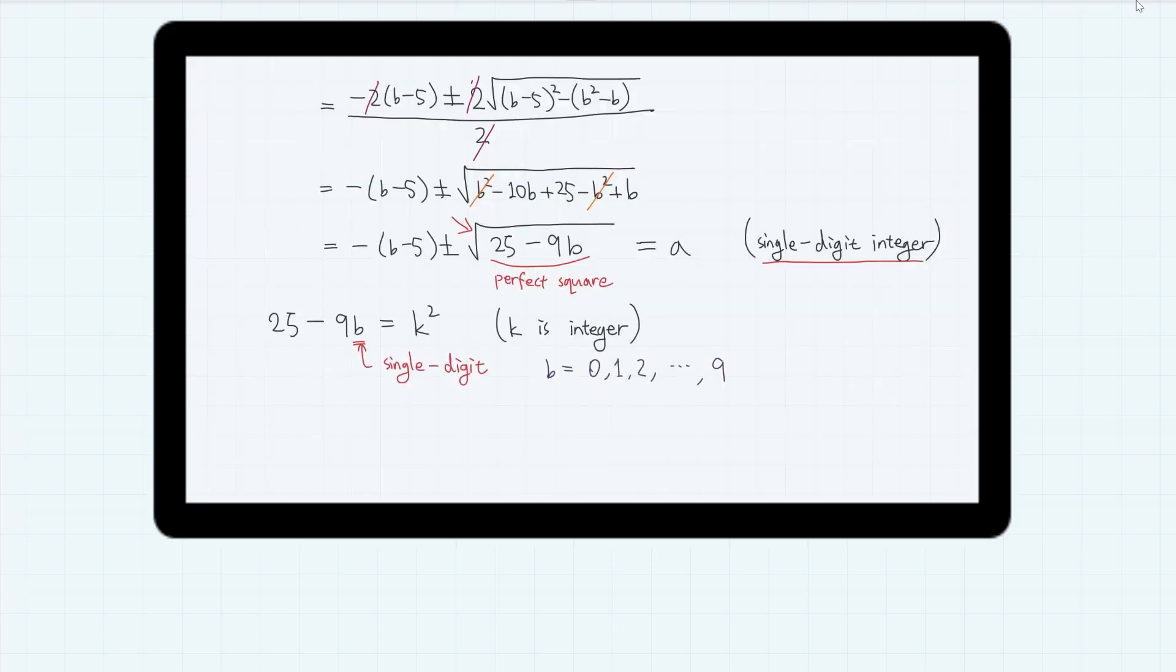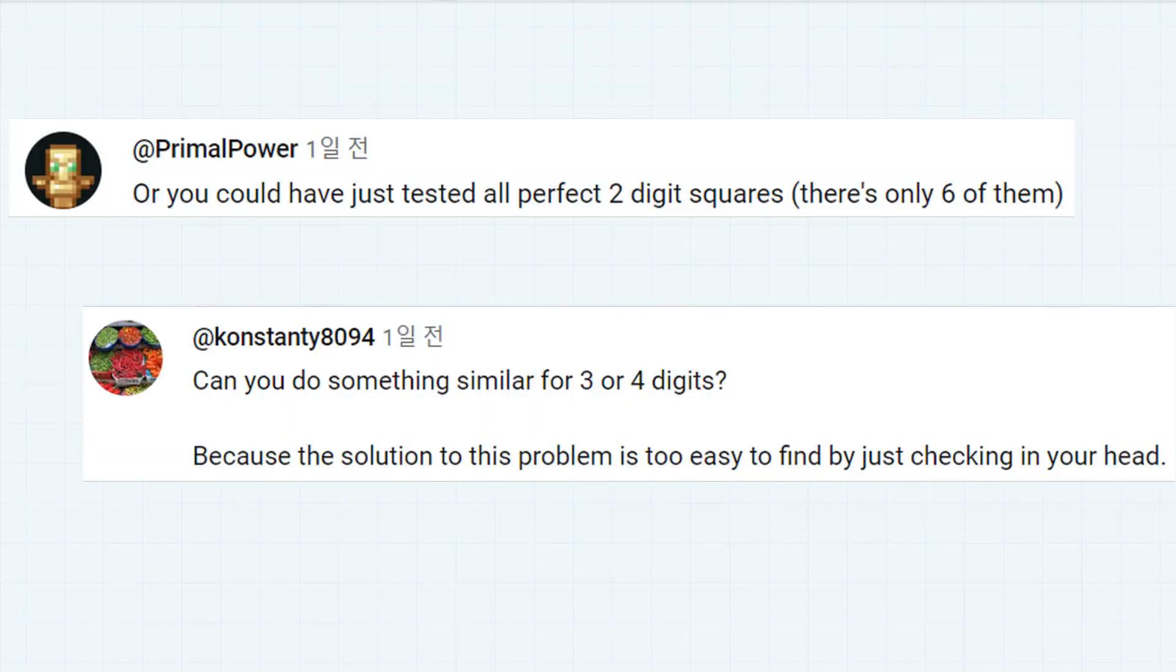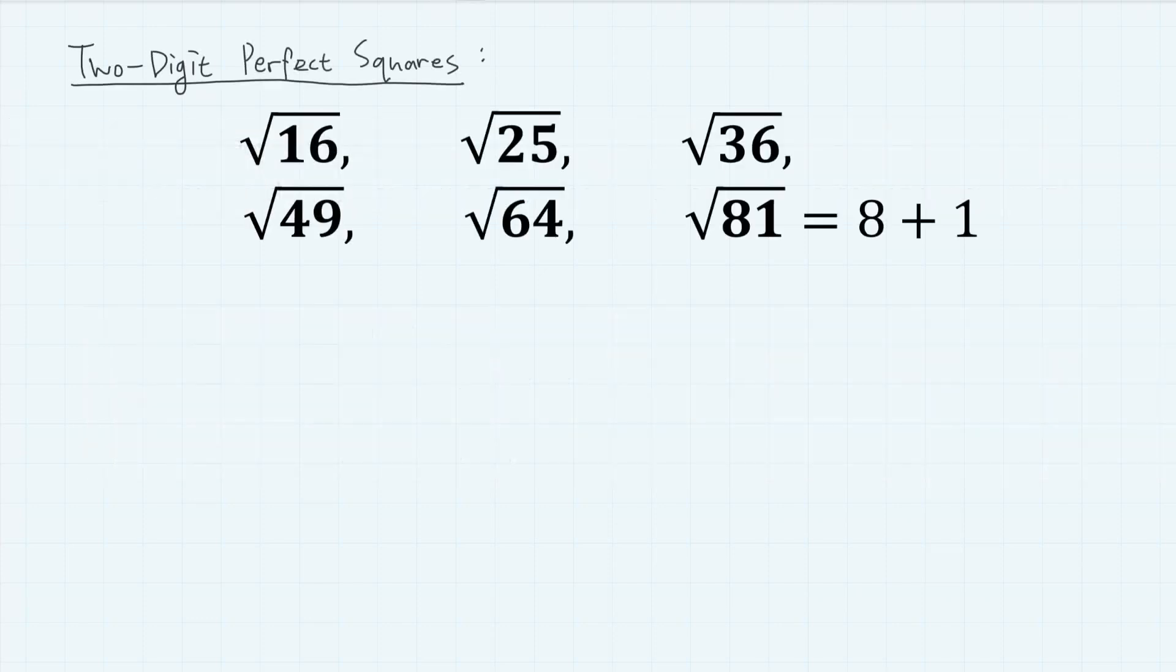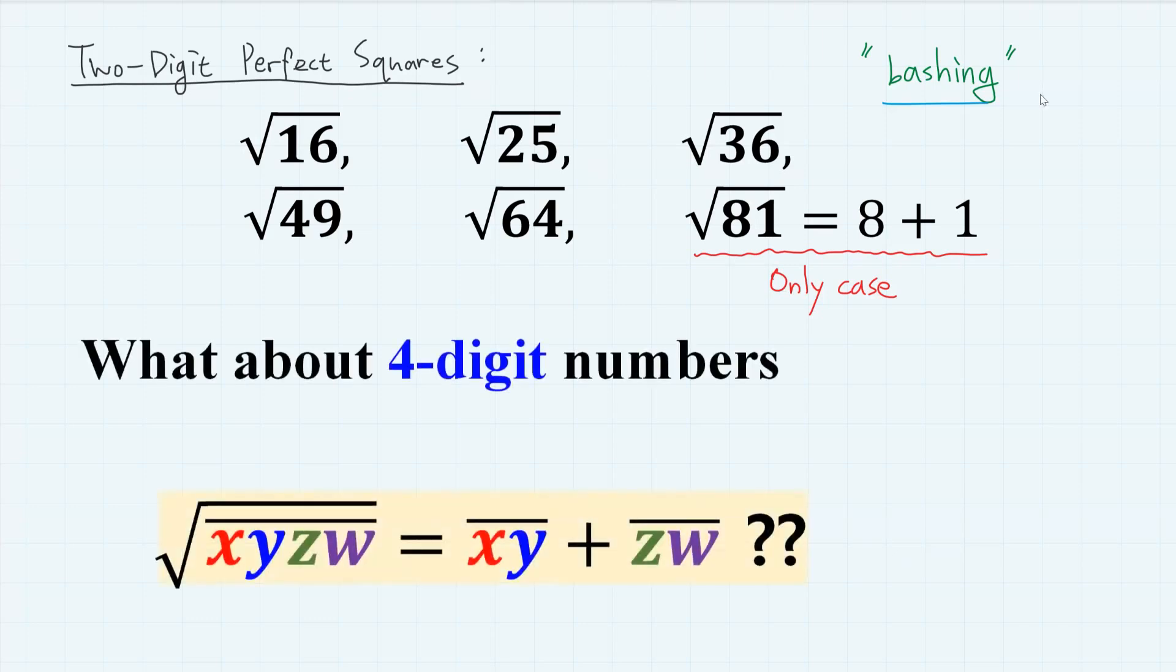In that video, I used some basic theory of quadratic equations to prove that, but many viewers pointed out that the most efficient way is to simply test all two-digit perfect squares, since there exist only six of them. And you can easily find that 81 is the only two-digit number whose square root equals the sum of its digits. Although this bashing method doesn't allow us to learn how to deal with quadratic equations with integer roots, it is the fastest way to do it, and some viewers wondered if we can expand this problem to have more digits.